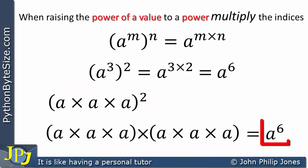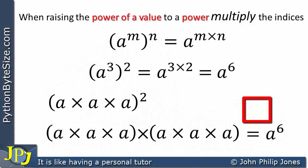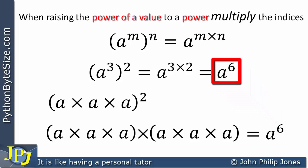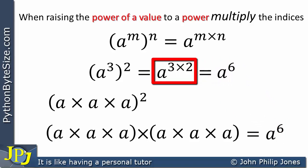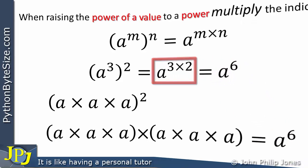This can be made equal to a to the 6th, which is a repeat of what we saw here, so it is valid for us to multiply the indices together as shown.